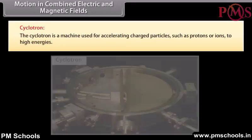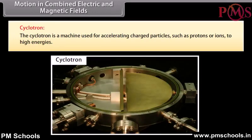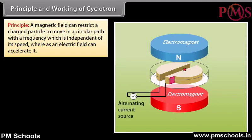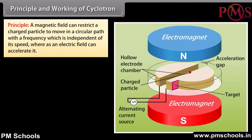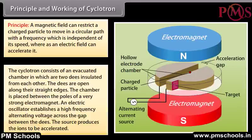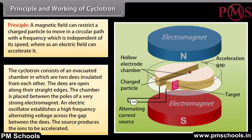The cyclotron is a machine used for accelerating charged particles such as protons or ions to higher energies. It works on the principle that a magnetic field can restrict a charged particle to move in a circular path with a frequency independent of its speed, while an electric field accelerates it. The cyclotron consists of an evacuated chamber containing two D-shaped electrodes (dees) insulated from each other, placed between the poles of a strong electromagnet.